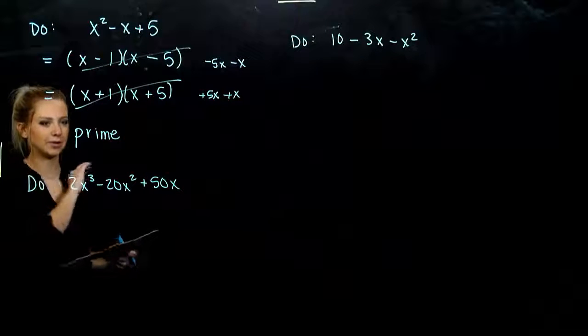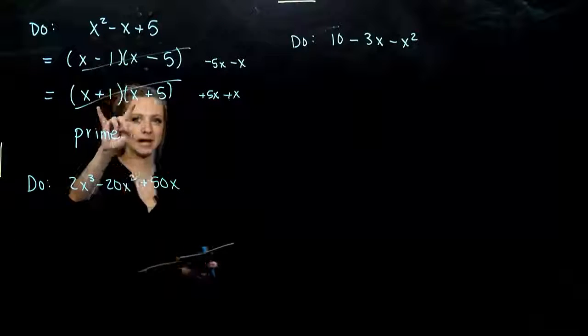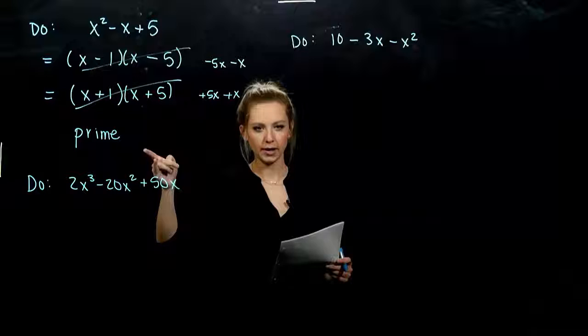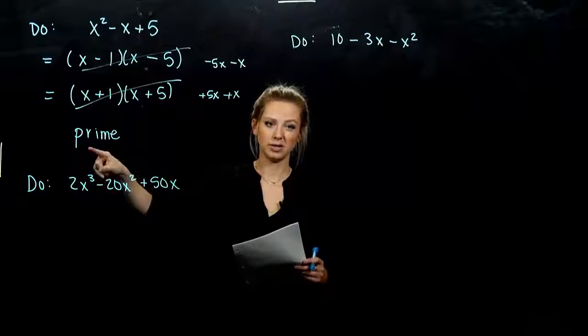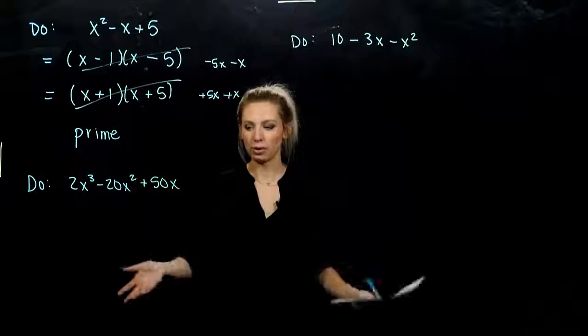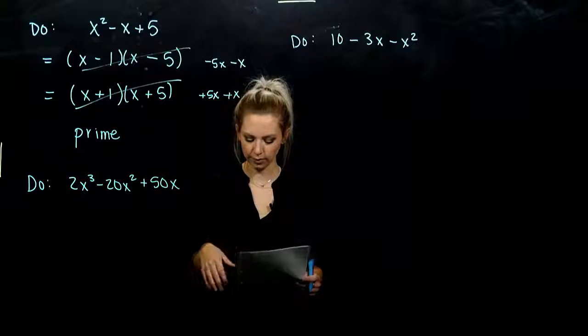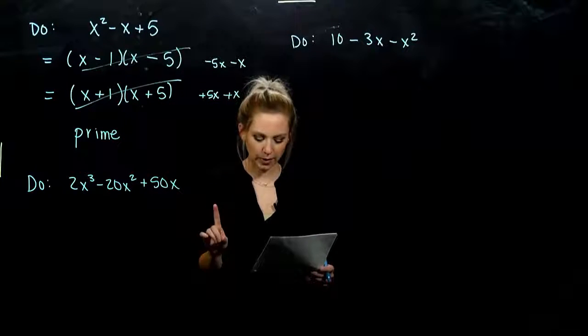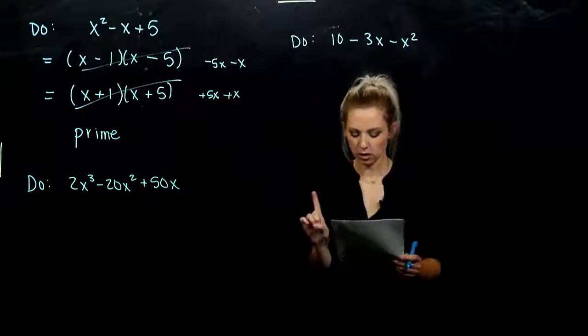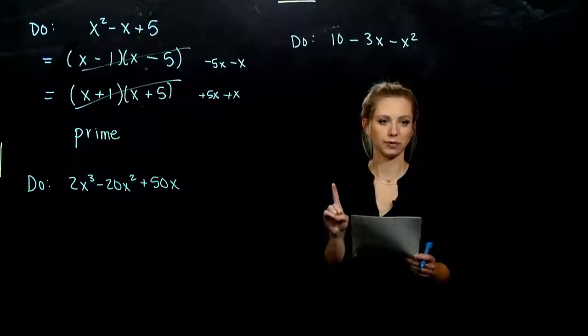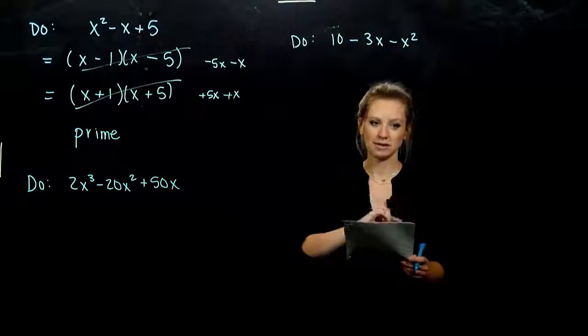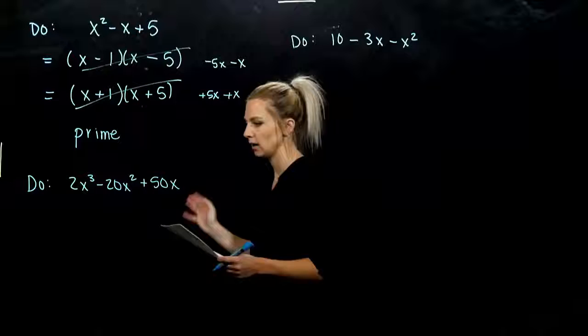So we've dealt with all of the cases. When the signs are the same, when they're different, when we have prime polynomials. Now we're going to throw it all together and work on a few. First thing we always want to do when we're factoring is look for a common factor first. If it has one, we need to take it out of everything.